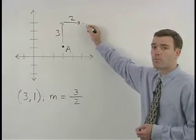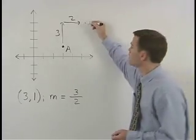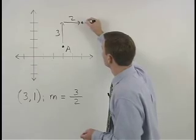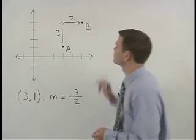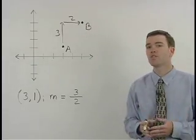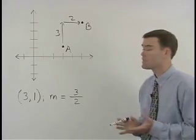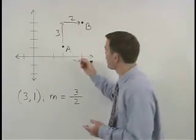And that's where we plot our second point which we call B. Our answer is then the line that contains the points A and B.